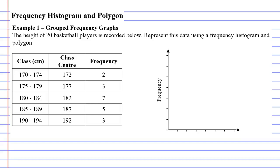All right, example one, which is called a grouped frequency graph, or grouped frequency histogram and polygon. It's called a grouped frequency histogram and polygon because we've got these class intervals here. They're not just scores this time.